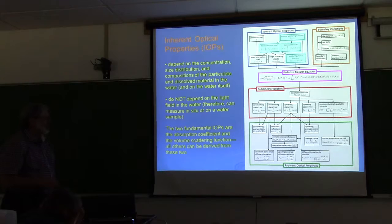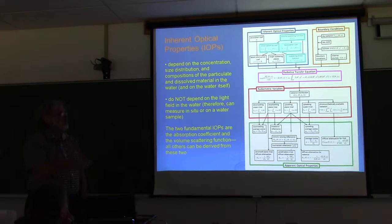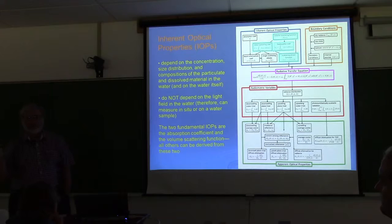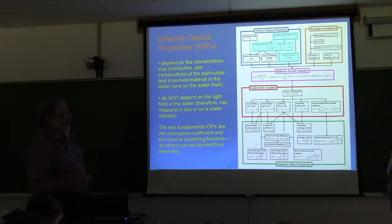The other thing to remember about IOPs is that there are two fundamental ones: the absorption coefficient, which is a function of depth and wavelength, and the volume scattering function. If you have those two, any other things you might want — total scattering, backscattering, beam attenuation — are all derivable from these two. Absorption you can get from your AC9 or spectrophotometer; the volume scattering function is a little bit harder to get.